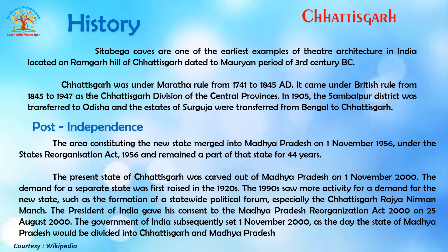After independence, the area constituting the new state merged into Madhya Pradesh on 1st November 1956 under the States Reorganisation Act 1956, remaining a part of that state for 44 years. The present state of Chhattisgarh was carved out of Madhya Pradesh on 1st November 2000. The demand for a separate state was first raised in the 1920s. The 1990s saw more activity, including the formation of the Chhattisgarh Rajya Nirman Manch. The President of India gave consent to the Madhya Pradesh Reorganisation Act 2000 on 25th August 2000, with 1st November 2000 set as the day of division.